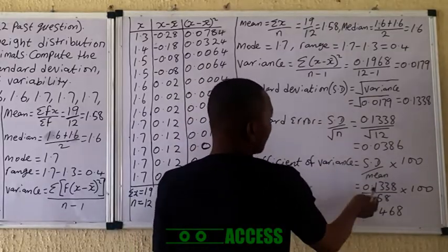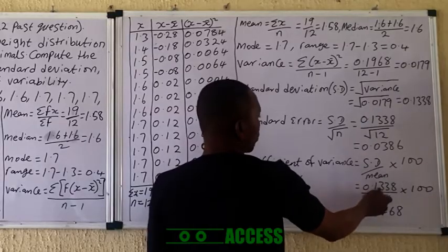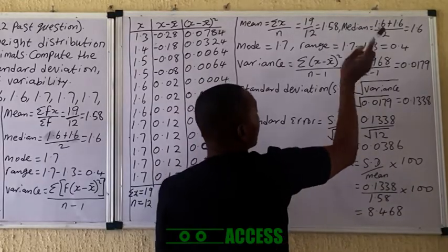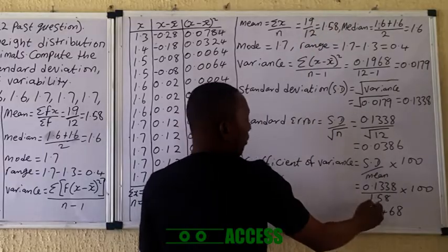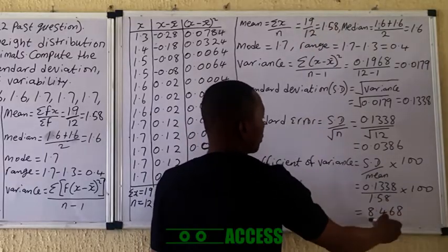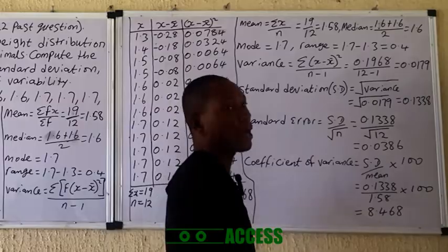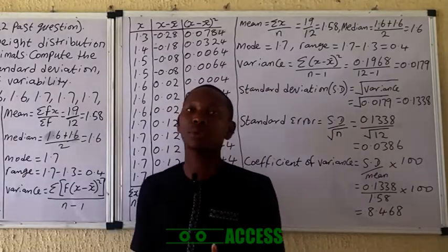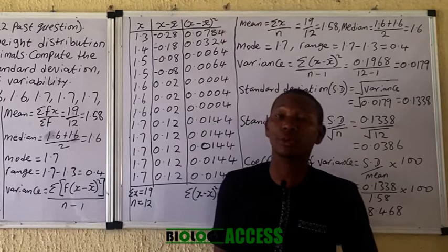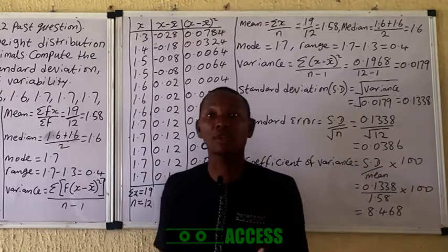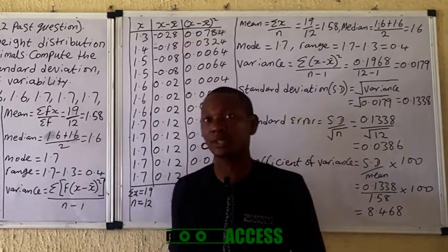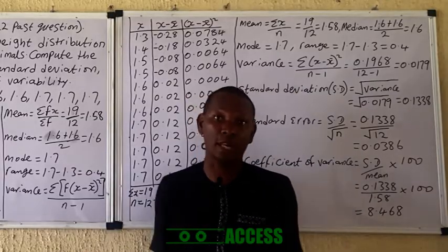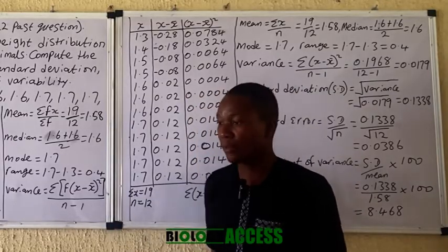The coefficient of variation (CV) is the standard deviation divided by the mean, multiplied by 100. The standard deviation is 0.1338 and the mean is 1.58, so CV = (0.1338 / 1.58) × 100. That gives you the final result. In my next video I'll be covering how to calculate correlation and regression by hand, as well as other aspects of biostatistics such as chi-square. Thank you very much.